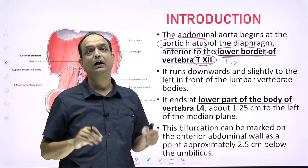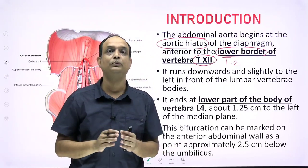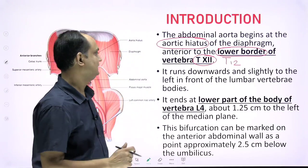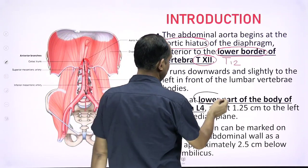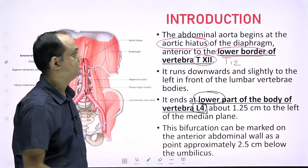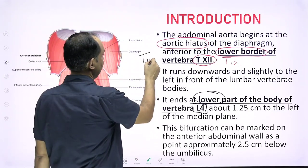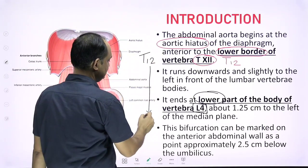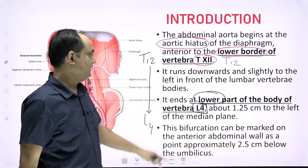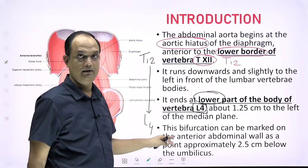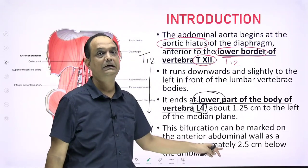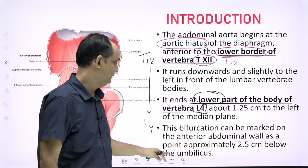The second important point is at what level the abdominal aorta terminates into its two terminal branches. The answer is at the lower part of the body of L4 vertebra. So there are two numbers to remember: it starts at T12 and ends at L4. This bifurcation can be marked on the anterior abdominal wall approximately 2.5 centimeters below the umbilicus.